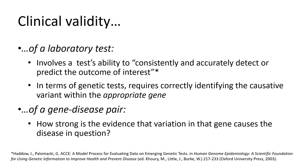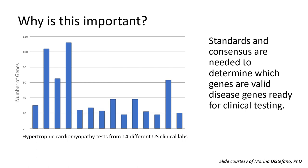The phrase clinical validity can mean different things in different contexts. When we use this phrase in the context of a laboratory test, we're talking about its ability to consistently and accurately detect or predict the outcome of interest. In terms of genetic testing, whether it's a panel or an exome or a genome, we're talking about the ability to accurately detect the correct disorder presenting in the individual being tested. This requires correctly identifying the causative variant within the appropriate gene, but how do we determine what the appropriate genes may be? Which genes are relevant for the disorders in question? How much or how little evidence is there to support a gene's relationship to disease?